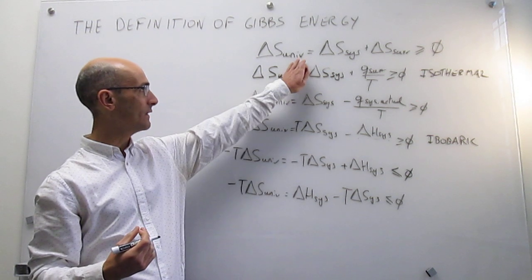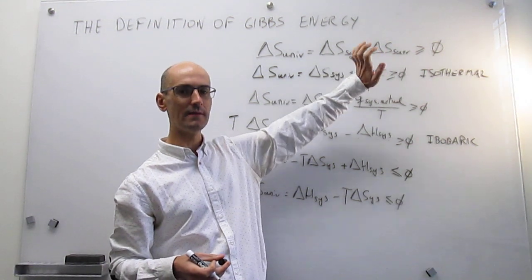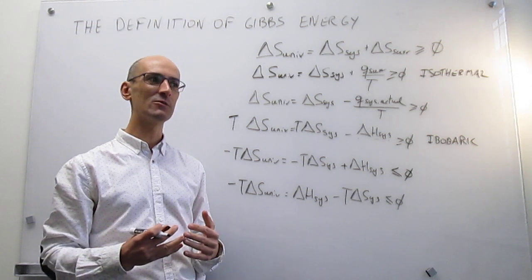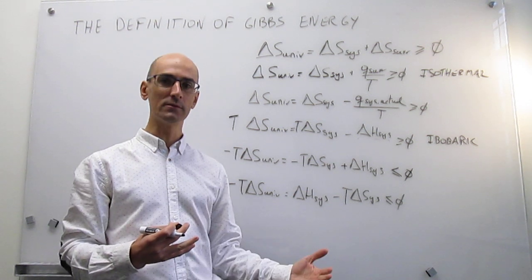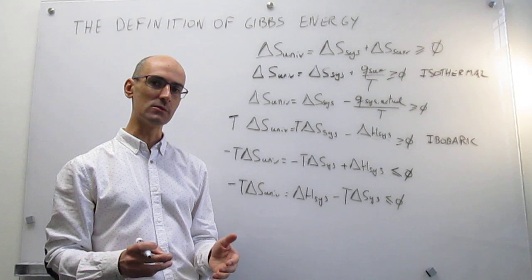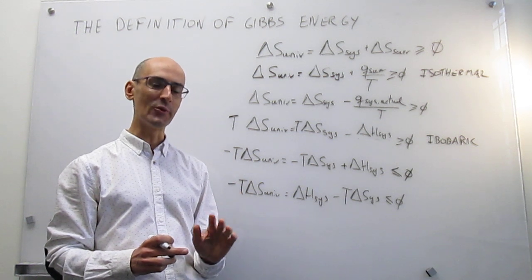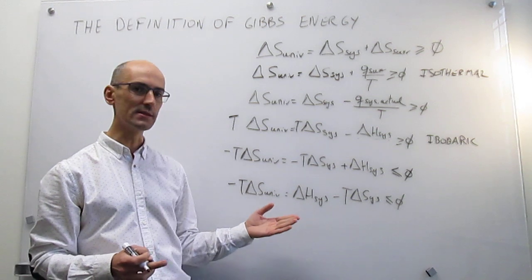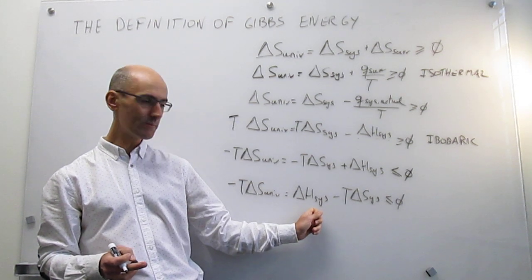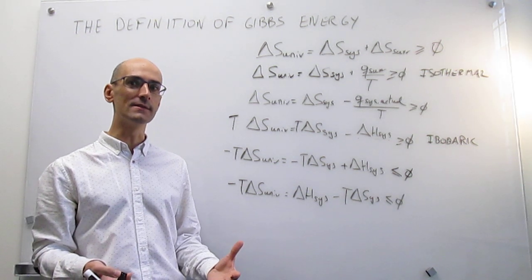Our problem was that the second law sometimes can be very difficult to calculate because you have to take care of both parts of the universe — the system and the surroundings. What we have done is come up with a version of the second law that only contains state functions of the system, which is very useful. We had to assume the process is isothermal and isobaric, but under those conditions — constant temperature and constant pressure — we have a convenient version: delta H minus T delta S, and we know how to calculate both of those quantities.